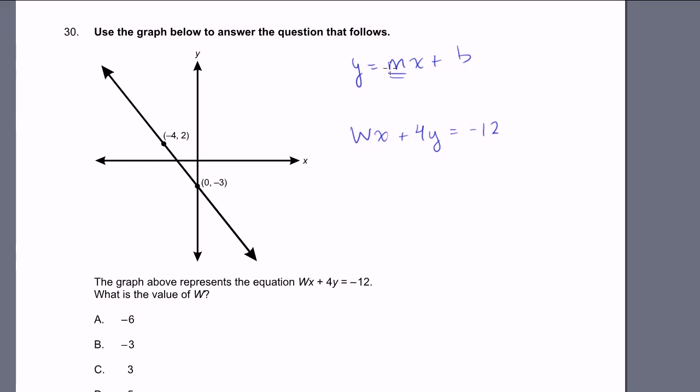They said that the line is wx plus 4y equals minus 12. I want to put it into the standard mx plus b form. If we subtract wx from both sides, we get 4y equals minus wx minus 12. And then divide both sides by 4, you get y equals minus w over 4x minus 3. So this is the equation of the line. We have to figure out what w is. This right here, minus w over 4, is the slope of the line.